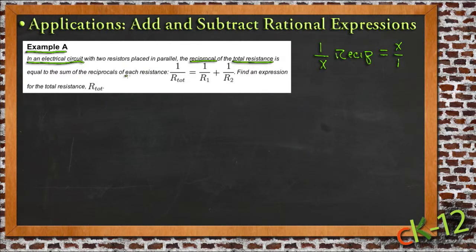So we're going to take each resistance, and the reciprocal of each of those, and add them together. So the reciprocal of the total is the same as the reciprocal of each resistance added together. And we can see that they wrote that out as an expression here.